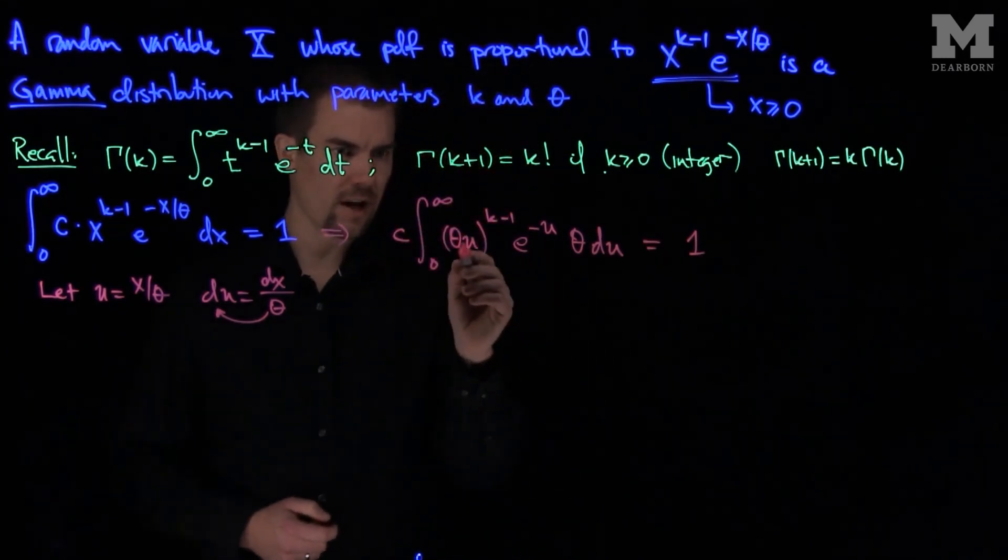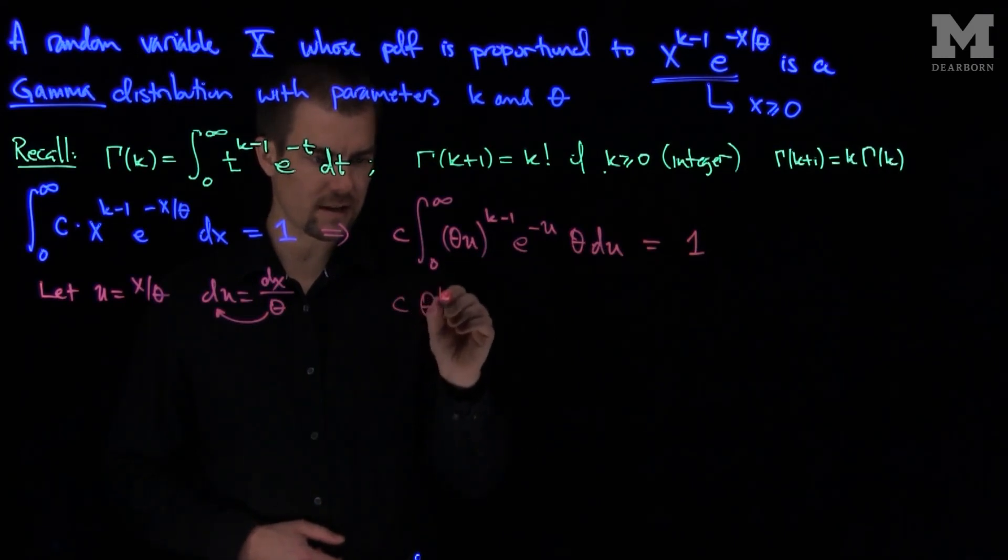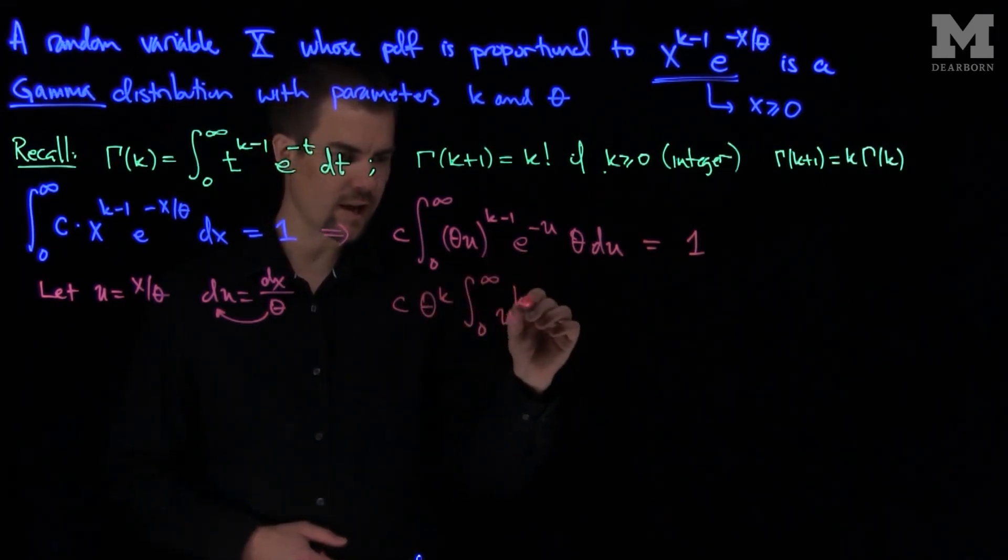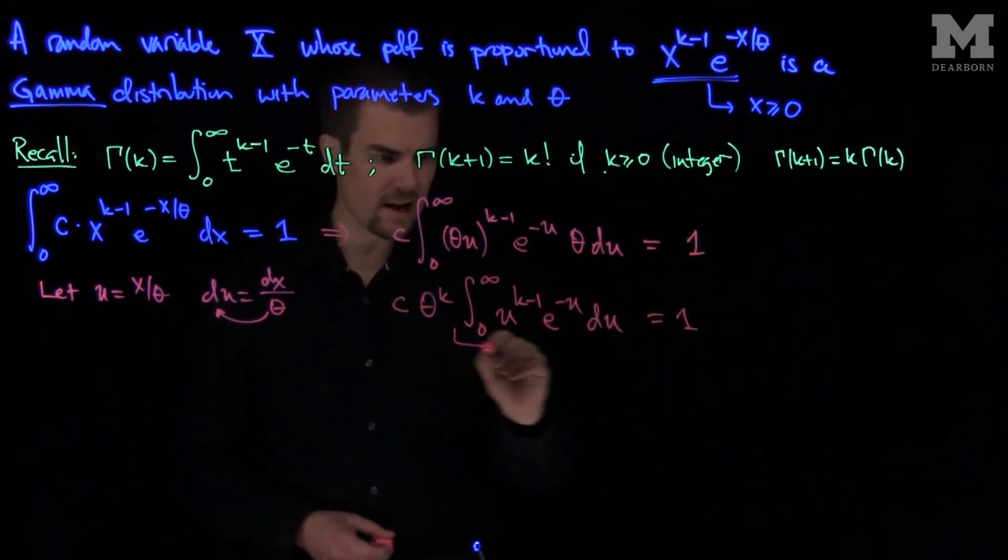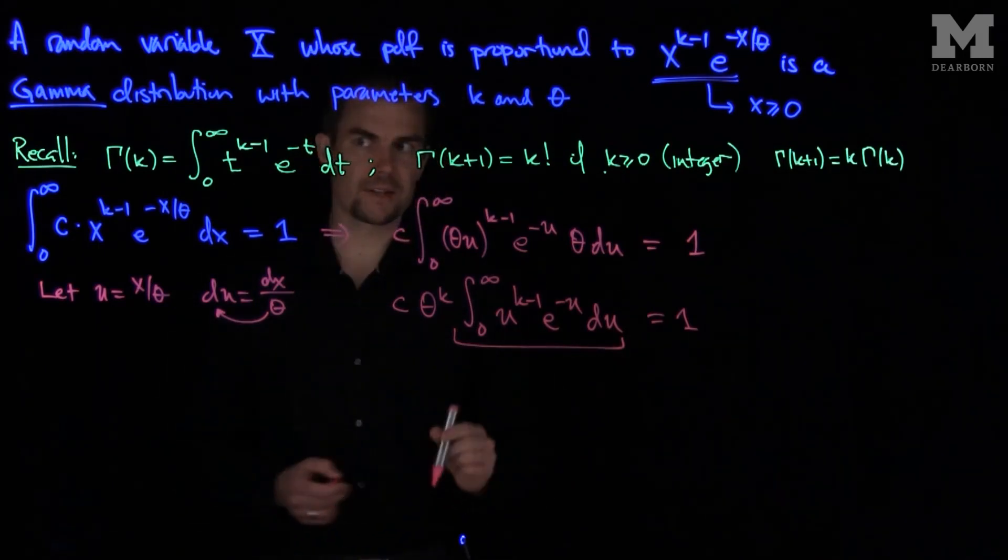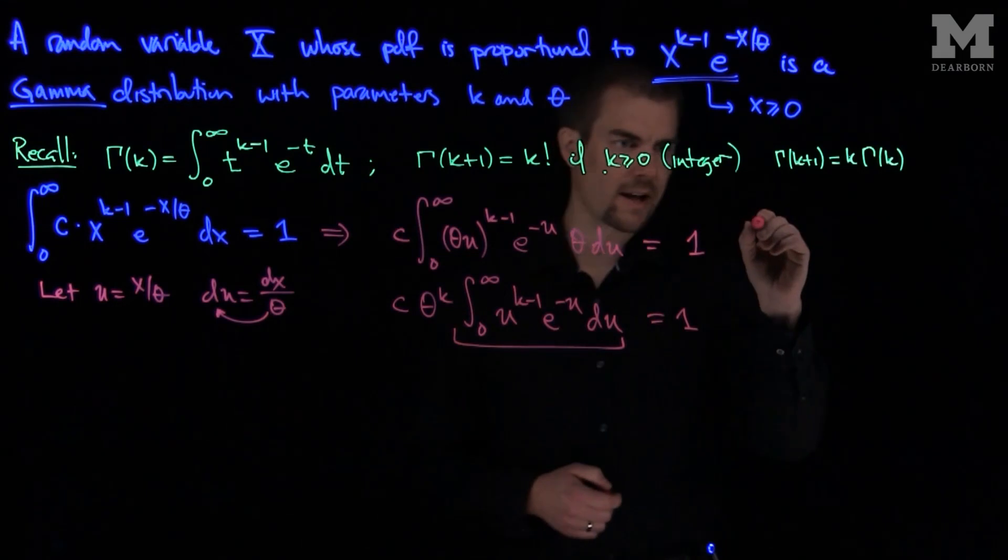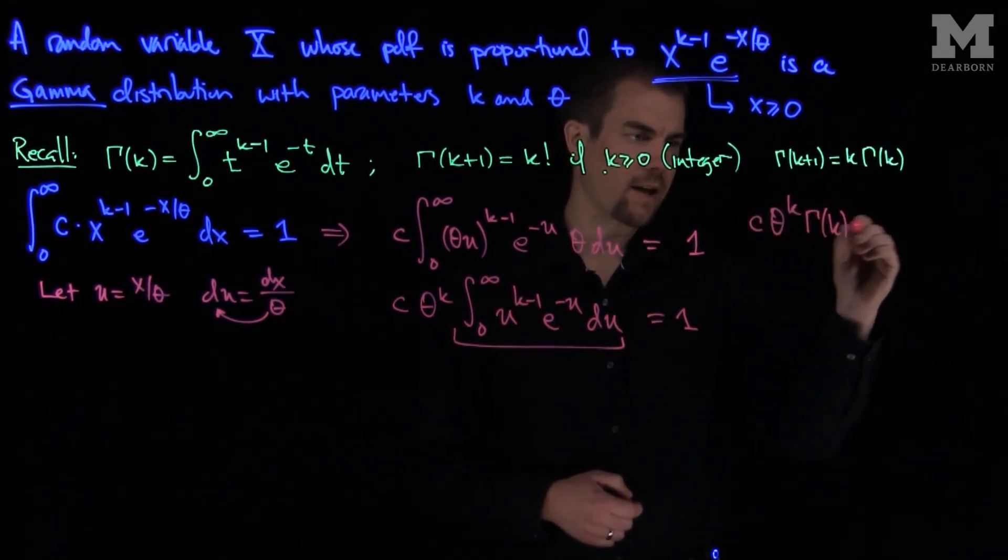And so all total we need this to be equal to 1. So what's left is I will have a c times theta to the k. The integral from 0 to infinity of u to the k minus 1, e to the negative u du. And we need this to be equal to 1. And now we realize that that integral term is exactly just gamma of k. So we need that c times theta to the k times gamma of k equals 1.